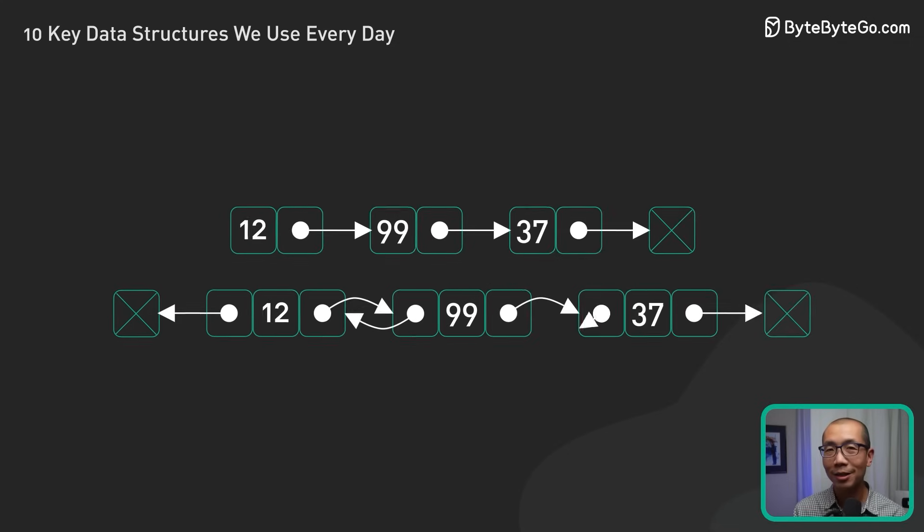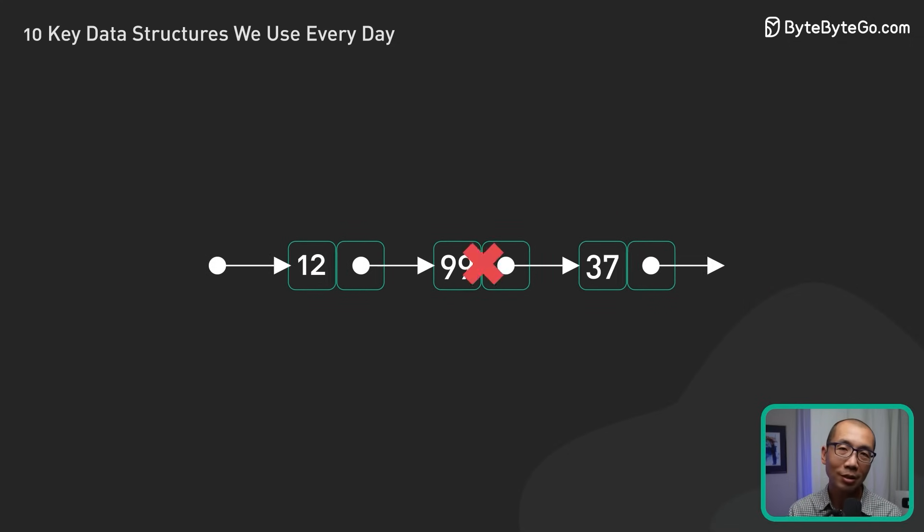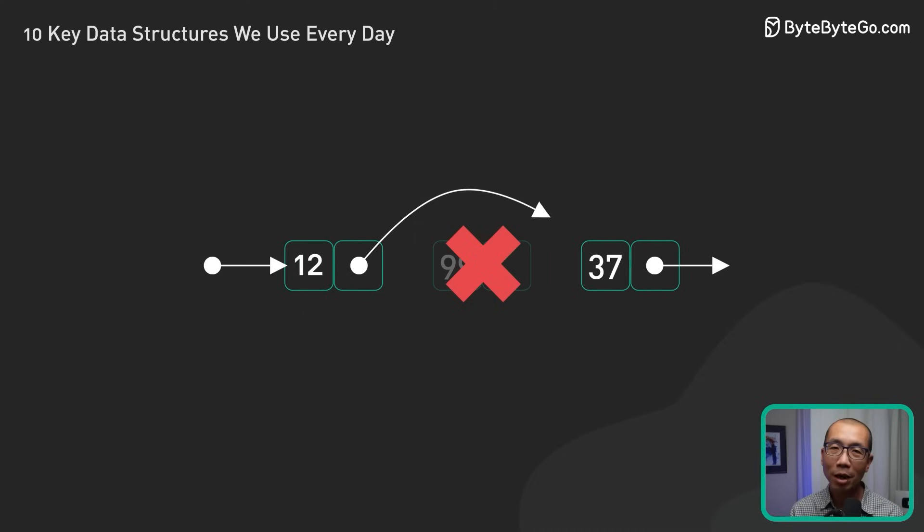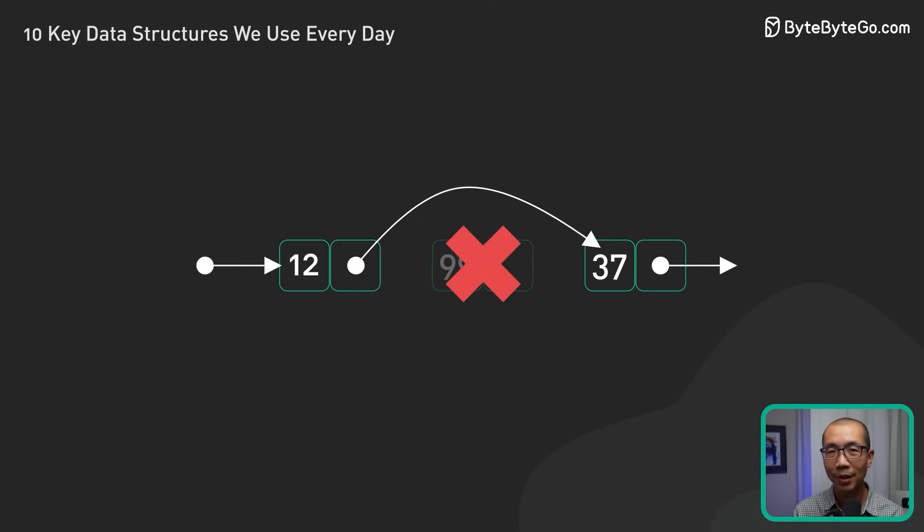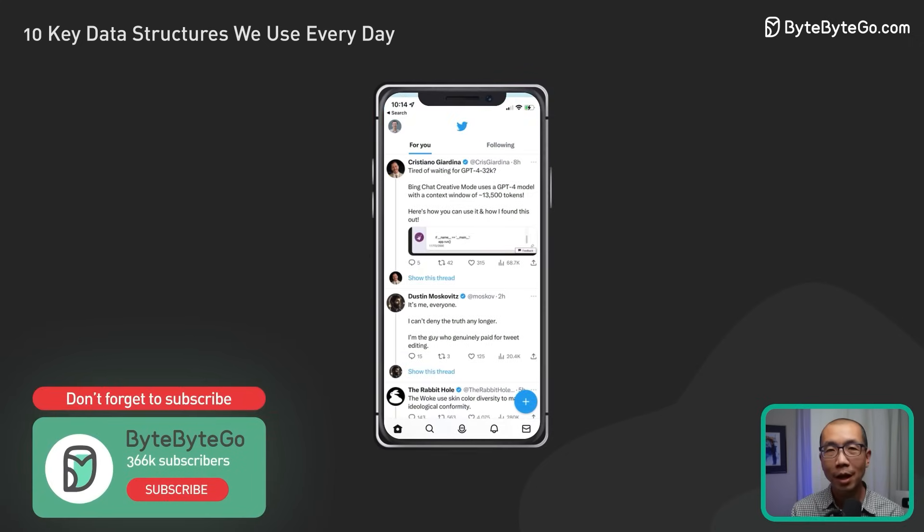Let's start by discussing lists. Lists are a versatile and essential data structure in software development. They are great for storing and manipulating ordered data. They are useful in various applications like task management, social media feeds, and shopping carts.